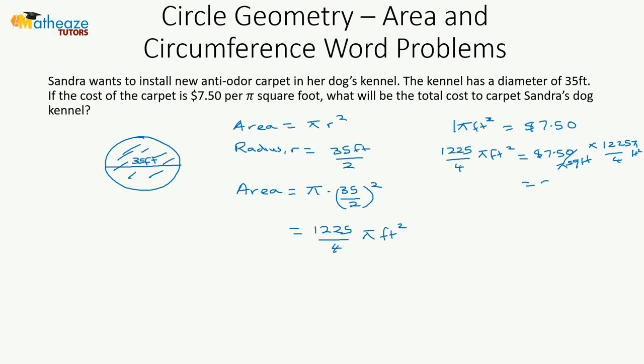This is going to give us 2,296.88. So it's going to cost $2,296 and 88 cents to carpet the dog's kennel. Wow, that's an expensive dog.